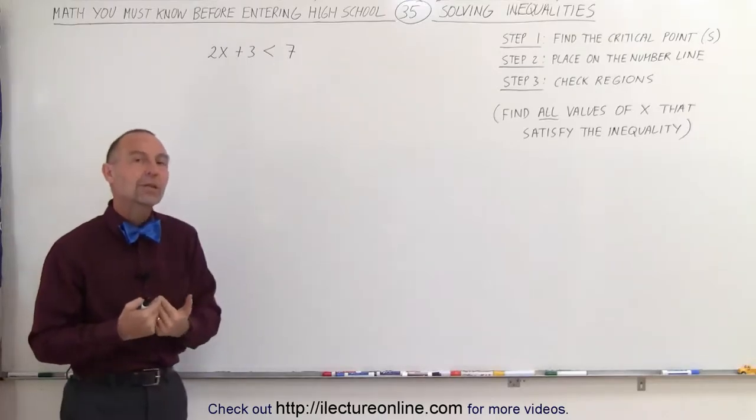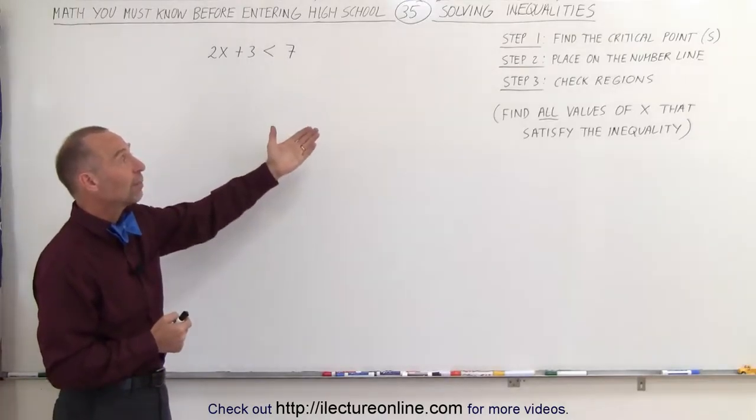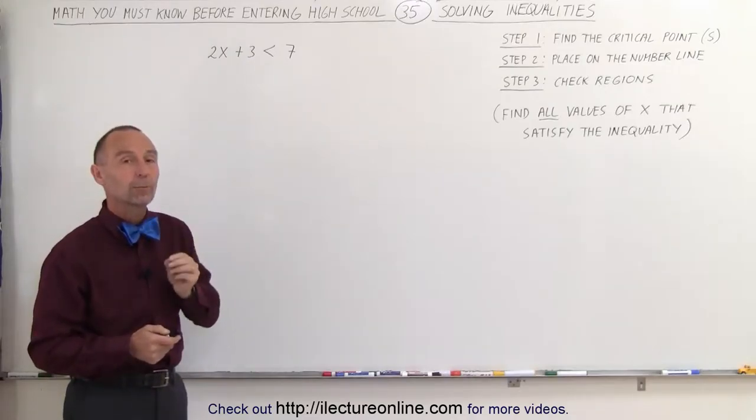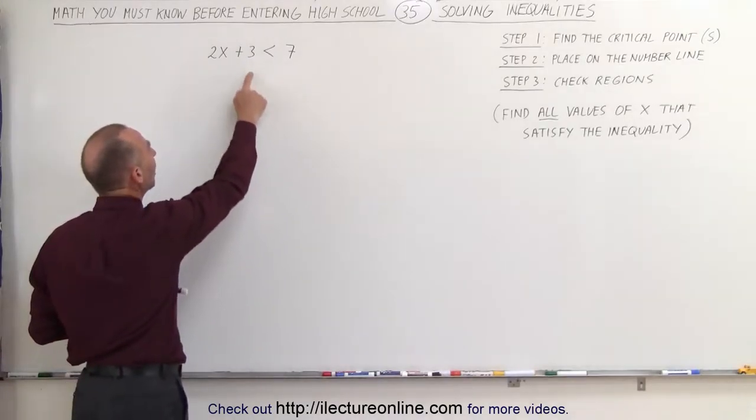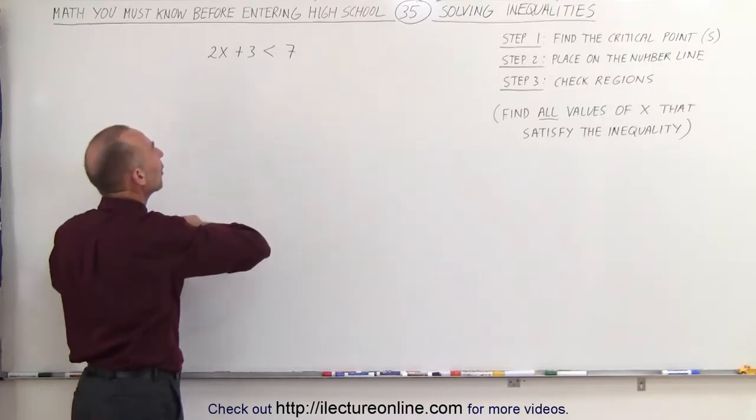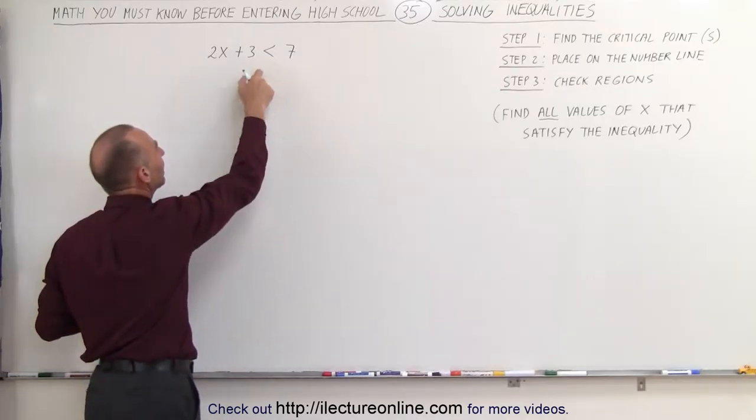So here are specific steps that we need to follow to do that. The first step is to find what we call the critical points. To do that, we're going to take our inequality and turn it into an equation by making the inequality sign into an equal sign.